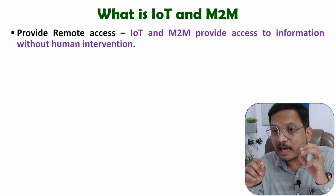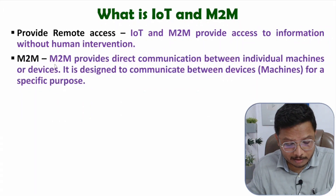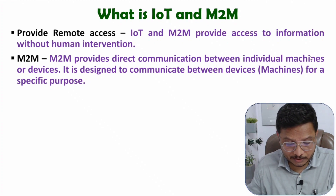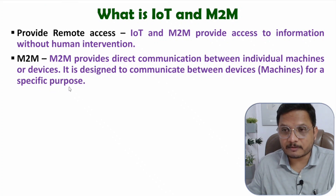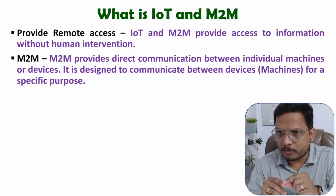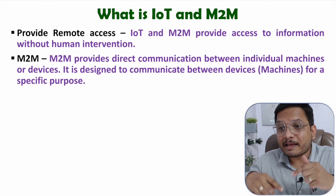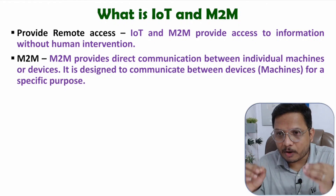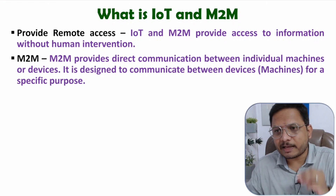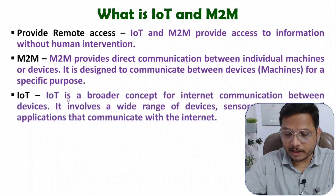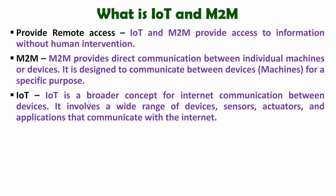When it comes to M2M network, it provides direct communication between individual machines or devices. It is designed to communicate between devices for a specific purpose, so the purpose is specific, the network is limited, and the application is specific — you can say it is for proprietary work. While IoT is a broader concept for internet communication between devices, in M2M only limited devices communicate with each other.